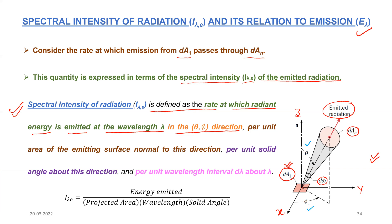Once again: it is defined as the rate at which radiant energy is emitted at the wavelength lambda in the theta-phi direction, per unit area of the emitting surface normal to this direction — which is the emitting surface here — per unit solid angle about this direction, and per unit wavelength interval d_lambda about lambda.